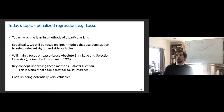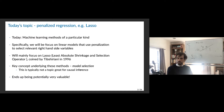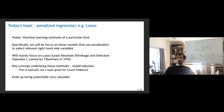Lasso is the least absolute shrinkage and selection operator. You'd think since it's an acronym it should be capitalized, but nobody capitalizes it. This was coined by Rob Tibshirani in 1996, although apparently there's a longer historical aspect to this. The key concept underlying these methods is this idea of model selection — we'll be able to know which variables matter for our regression and which are not important.